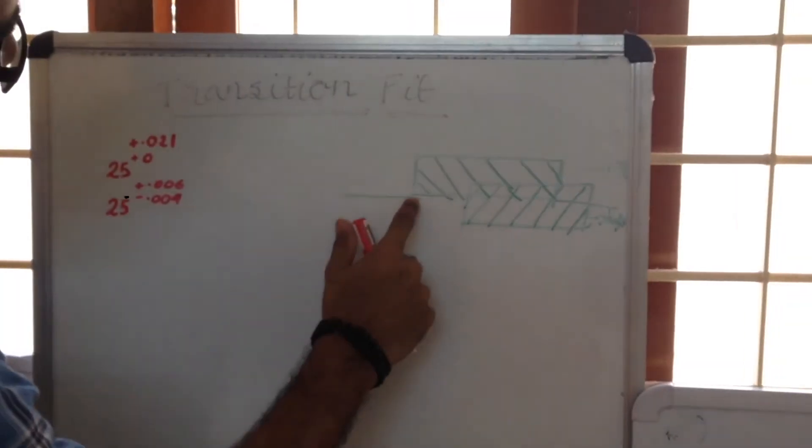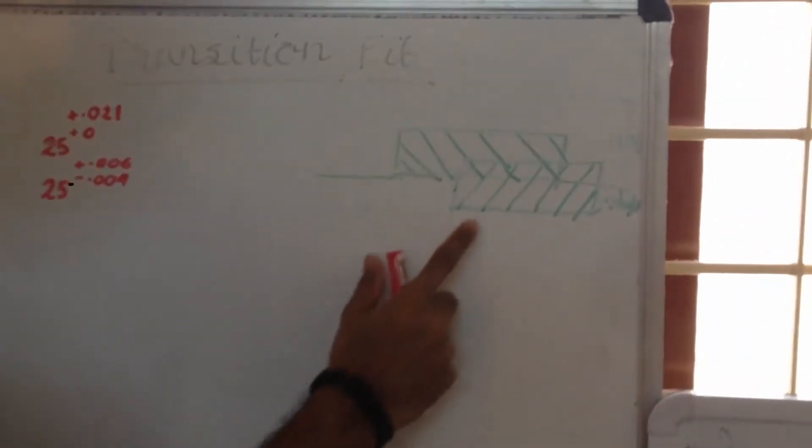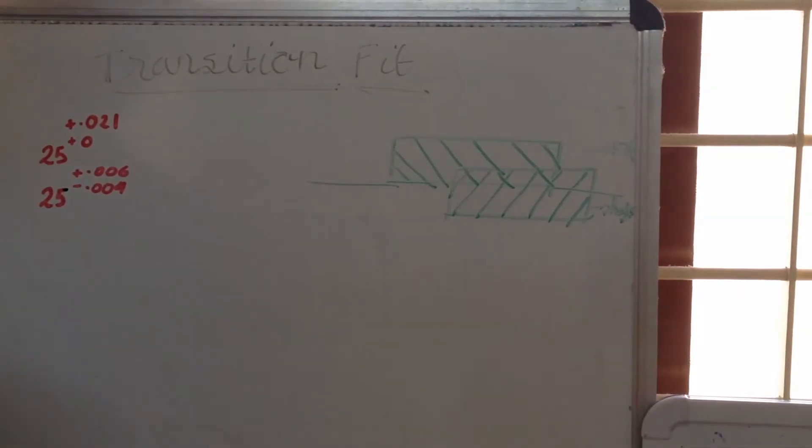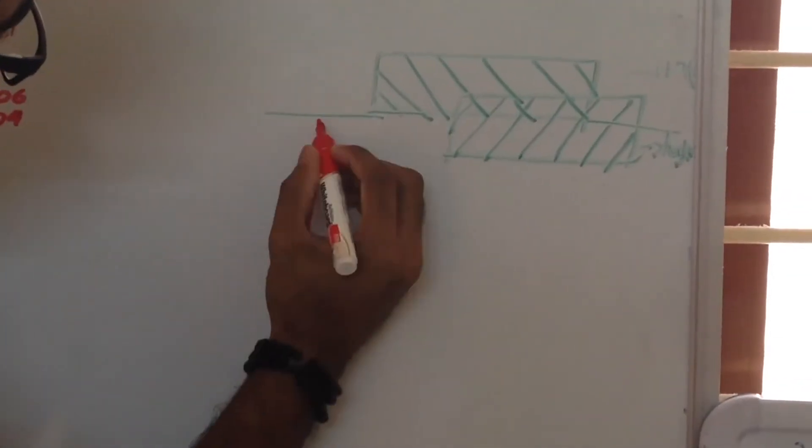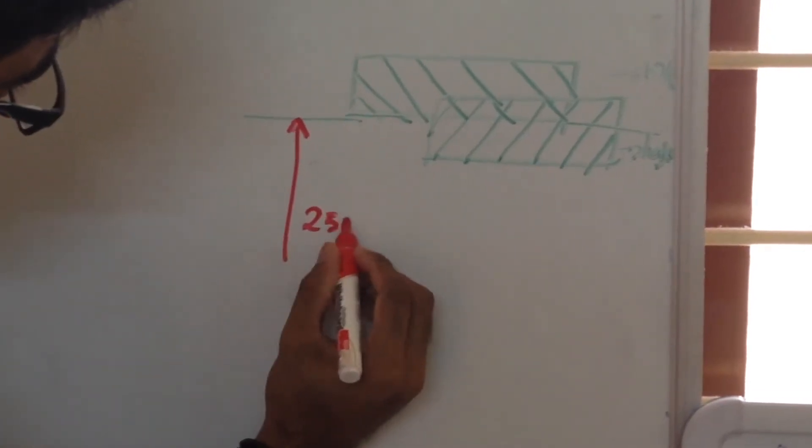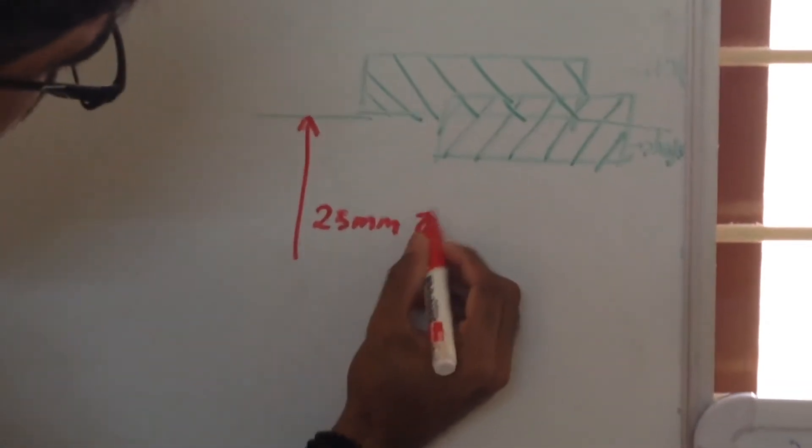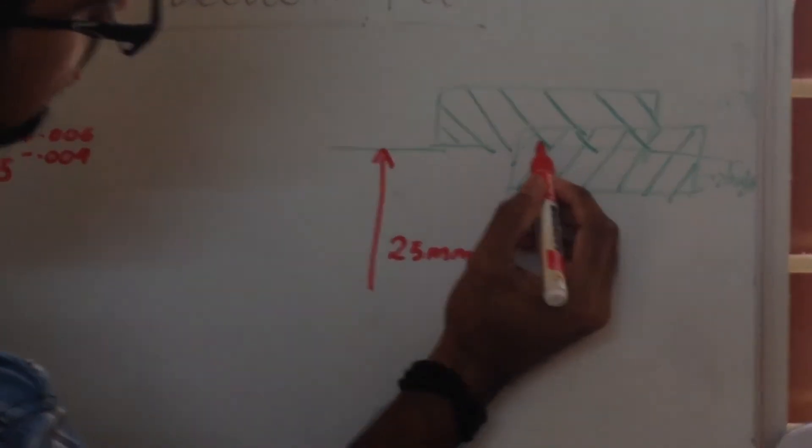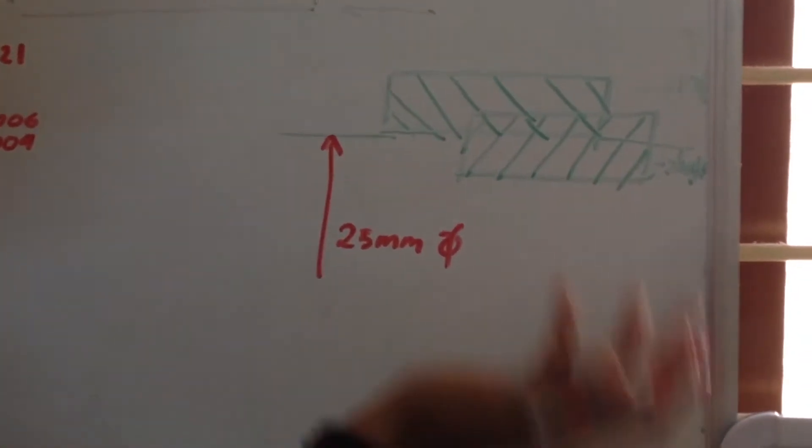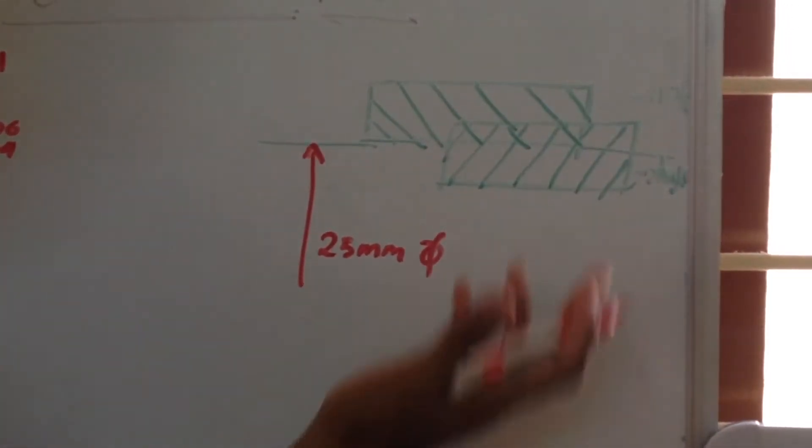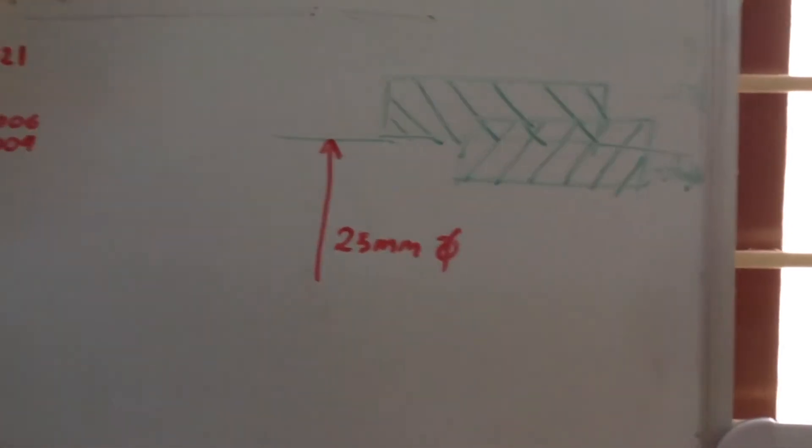Let's talk about transition region here. This is a tolerance level hole and this is the tolerance level shaft. The mean value is 25 mm, and here there is a transition region in which we cannot predict that the hole is always better than shaft, but hole is always less than shaft.